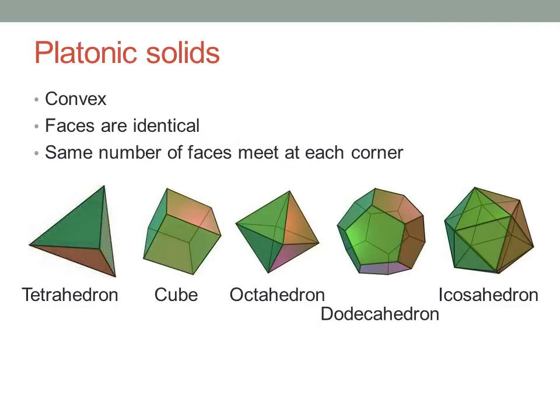The tetrahedron has three triangles meeting at each vertex, the octahedron four, and the icosahedron five. Can you work out why there are only five platonic solids? Look up Euler's formula and see if you can prove it to yourself.